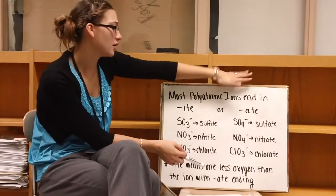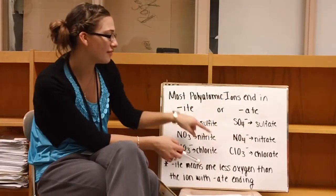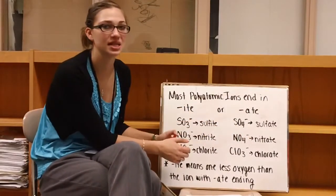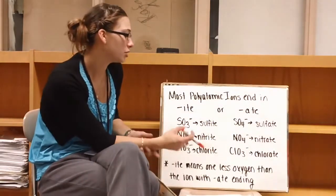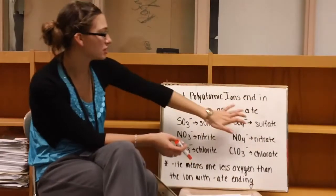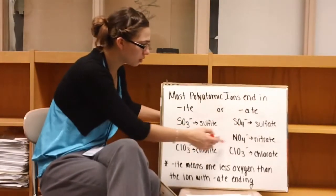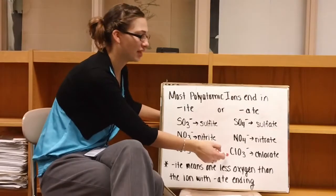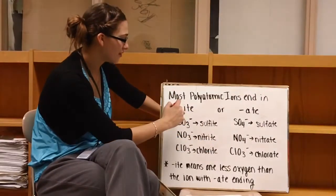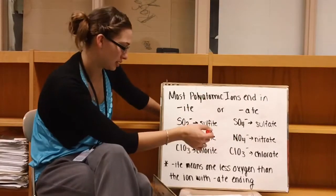Now if we look at our -ate, we have SO4-, which is sulfate, we have NO3-, which is nitrate, and we have ClO3-, which is chlorate. So if we look at our -ite versus our -ate, we can see that each of these has one more oxygen for it to have an -ate ending. For it to have an -ite ending, it needs to have one less oxygen than the -ate ending.